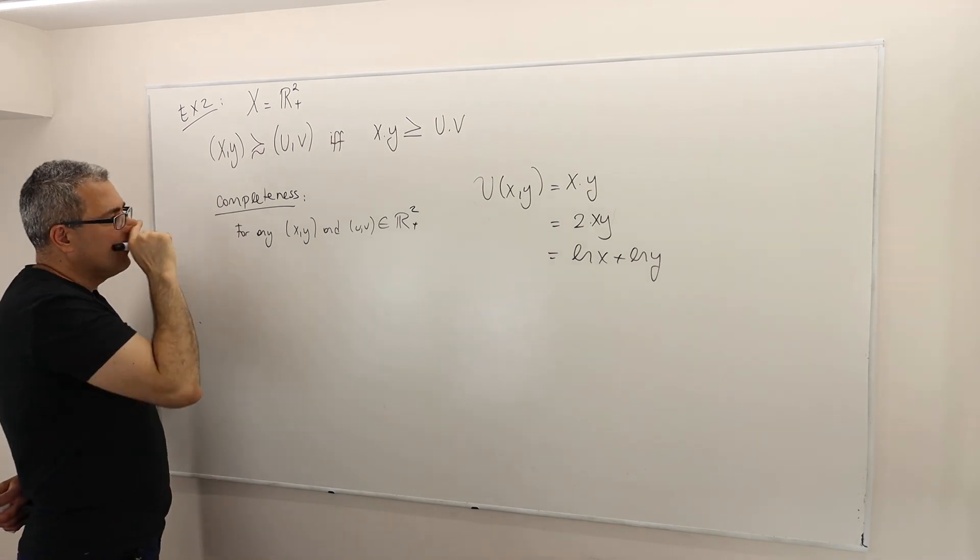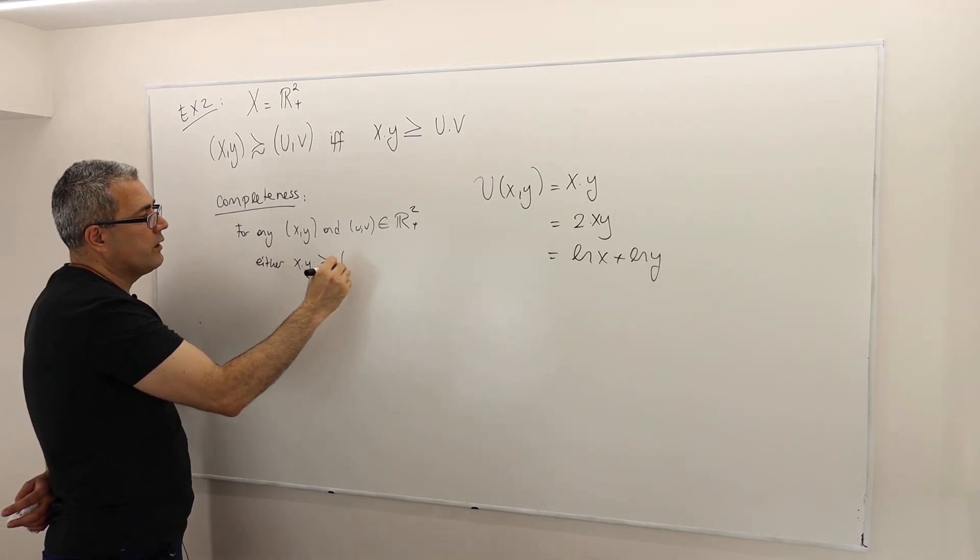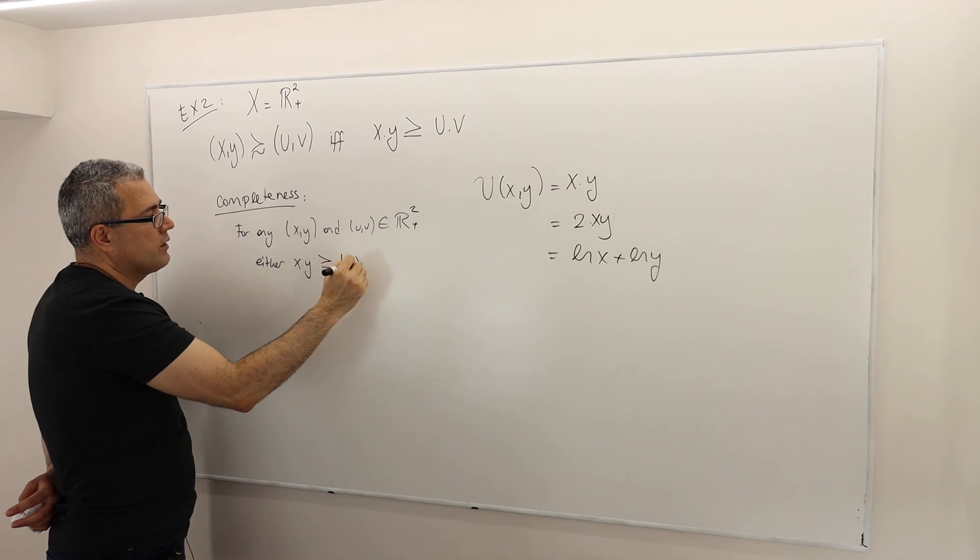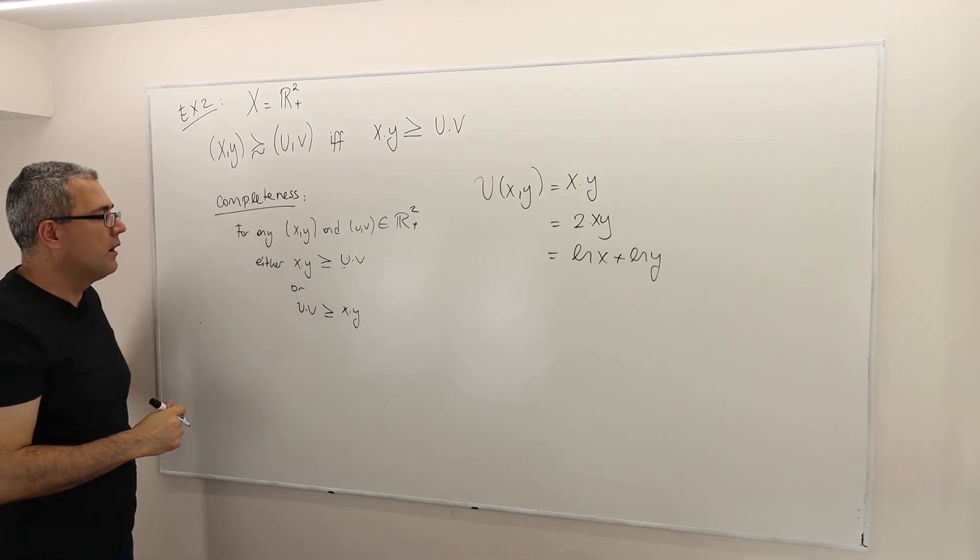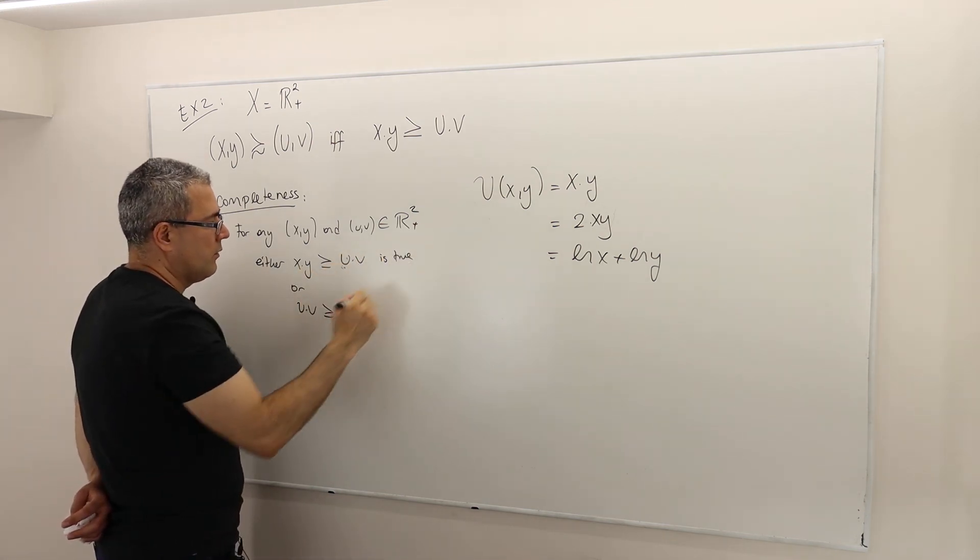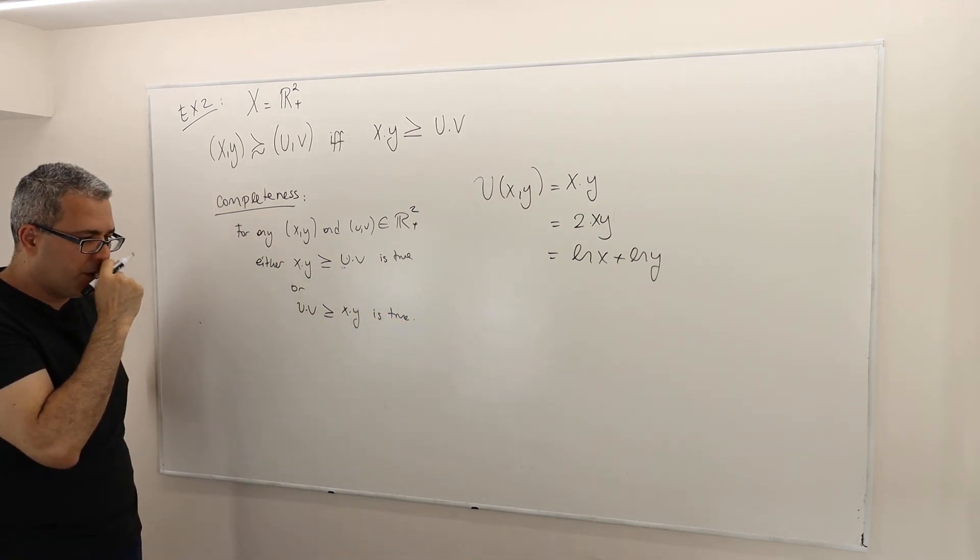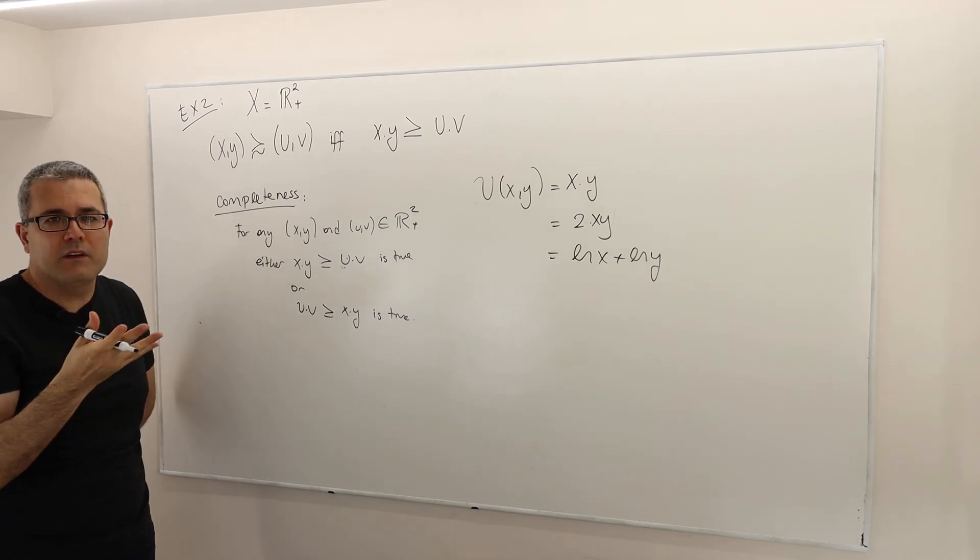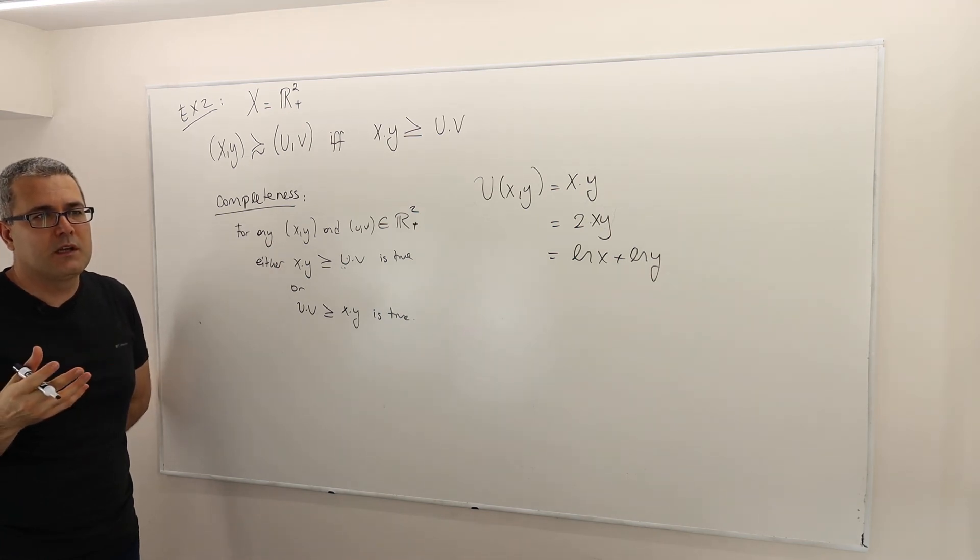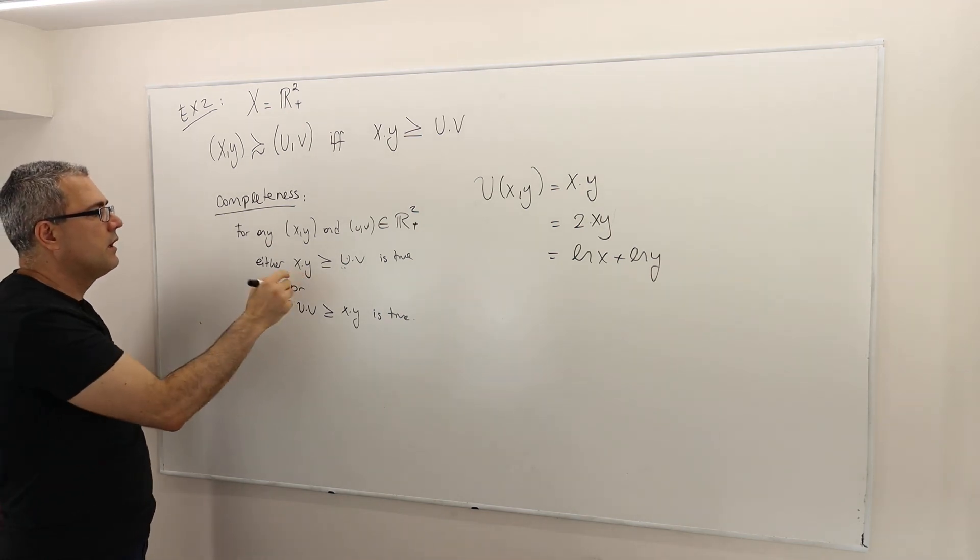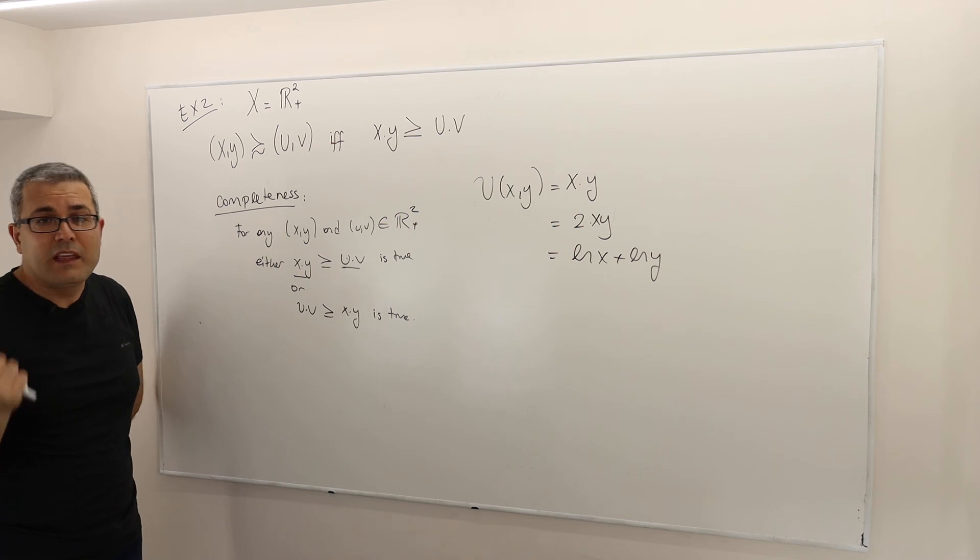what we know is that either x times y is greater than or equal to u times v, or u times v is greater than or equal to x times y. Either this is true or this is true. How do I know that? Maybe you should think about it a little. Is it possible to find a vector of real numbers, and when I multiply those real numbers, I cannot compare them? Is it ever possible?